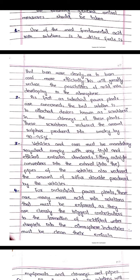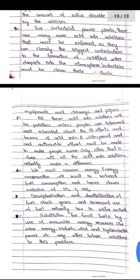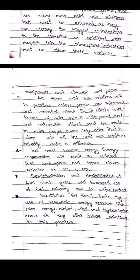Vehicles and cars must comply with very tight and efficient emission standards. Fitting catalytic converters into the exhaust pipes of vehicles also reduces the amount of sulfur dioxide produced by vehicles. For industrial power plants, there are many more acid rain solutions that must be enforced as they are clearly the biggest contributors to the formation of acidified water droplets in the atmosphere. Industries must clean their emission equipment, chimneys, and pipes. All these acid rain solutions will be pointless unless people are educated about the ill effects and harms of acid rain, and a nationwide effort must be made to make people aware.